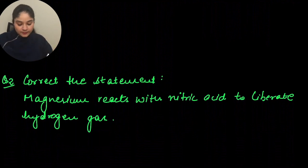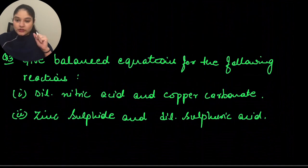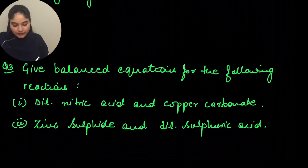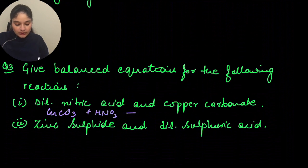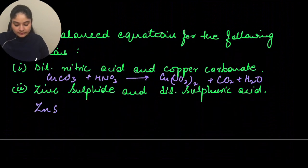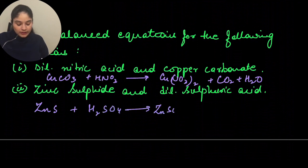Third question: give balanced chemical equations for the following reactions. First, dilute nitric acid and copper carbonate: CuCO₃ + HNO₃ gives Cu(NO₃)₂ + CO₂ + H₂O. Next, zinc sulfide and dilute sulfuric acid: ZnS + H₂SO₄ gives ZnSO₄ + H₂S gas.